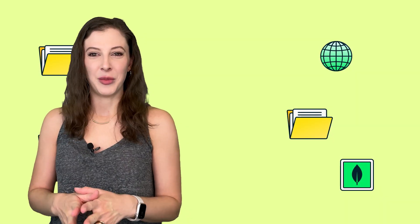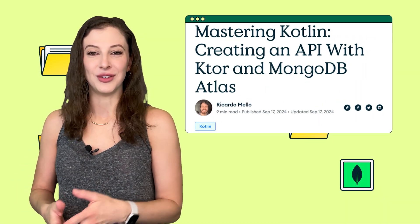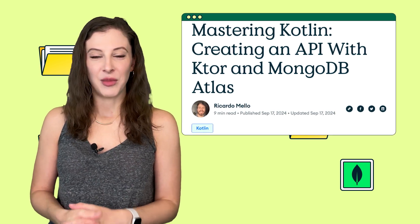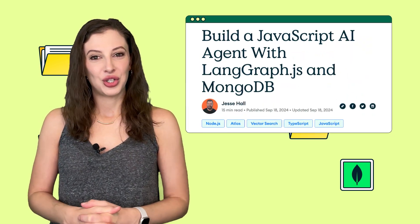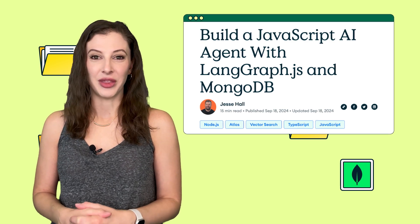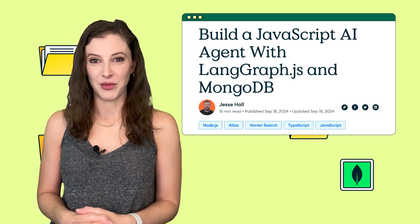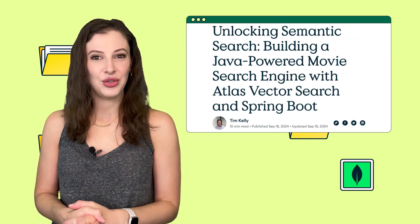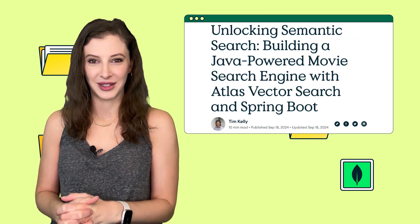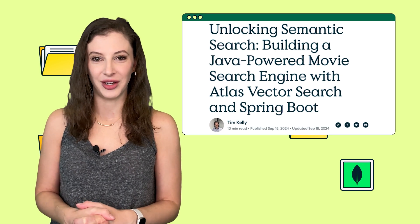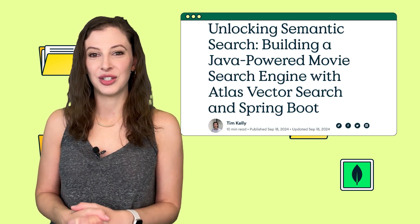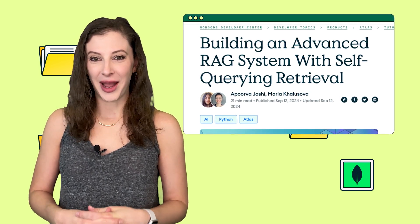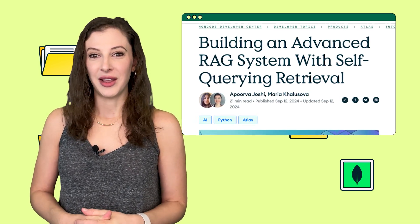On Developer Center, where we publish plenty of articles and tutorials, Ricardo wrote about creating an API with Ktor and MongoDB Atlas. Jesse will show you how to build a JavaScript AI agent with LangGraph.js and MongoDB. You can also find the video version of this content. Tim is unlocking semantic search and building a Java-powered movie search engine with Atlas Vector Search and Spring Boot. And Apoorva and Maria build an advanced RAG system with self-querying retrieval.